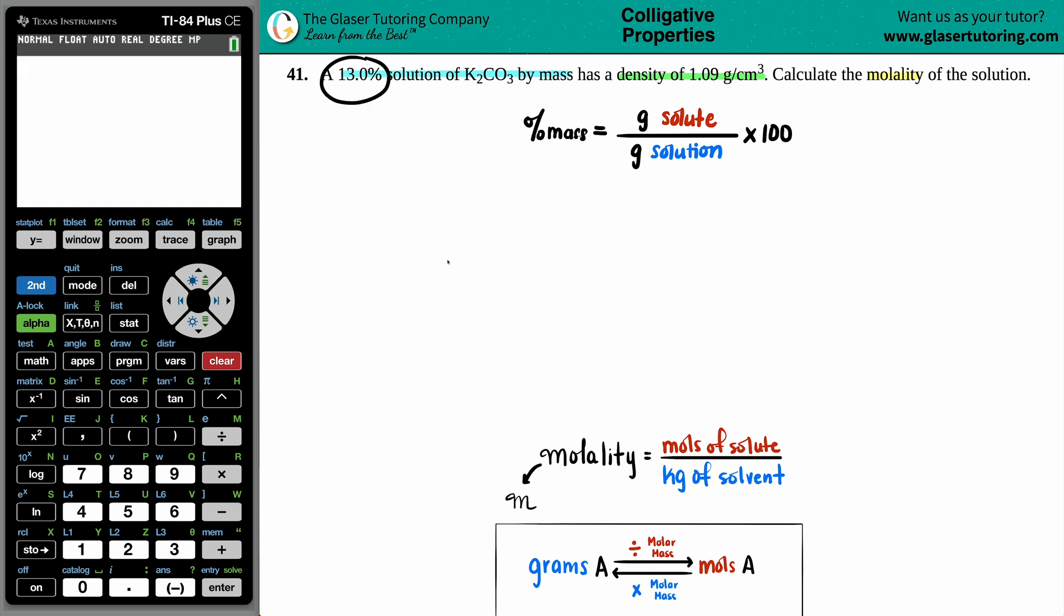Now they told us that we had a 13.0 percent by mass solution of the K2CO3. So we know that we have 13.0 equals something over something times 100. But they didn't tell me specifically how many grams of the solute I have or how many grams of the solution. But we can use our knowledge of math to get a ratio that will make sense.